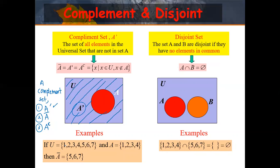Okay, so given universal set U = {1, 2, 3, 4, 5, 6, 7} and set A = {1, 2, 3, 4, 5, 6, 7} — okay that is the complement set example. So we move to the disjoint set.